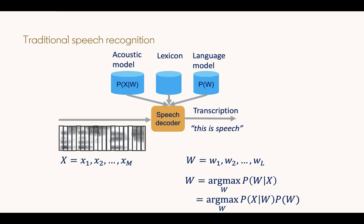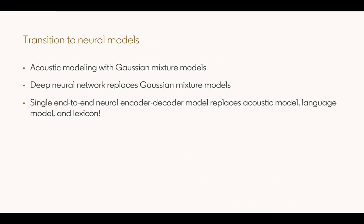Essentially, the language model provides constraints to the speech decoder, saying only certain word sequences are valid. Within those constraints, we score the acoustic sequence x1, x2, x3 using the acoustic model. We also have a lexicon, which I will show how it is used shortly. So a traditional speech recognition system has three components: an acoustic model, a lexicon, and a language model.